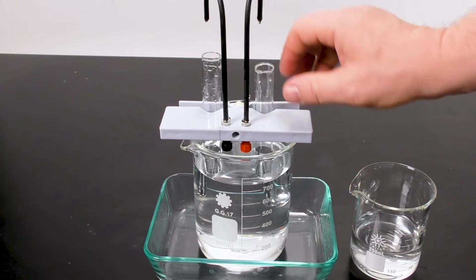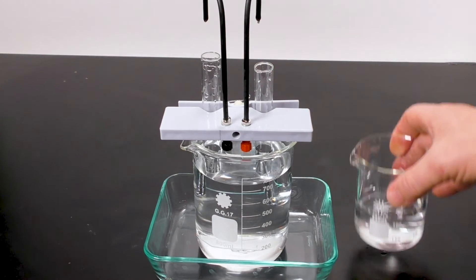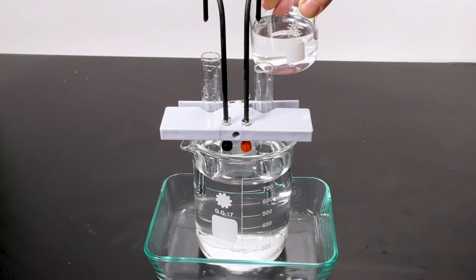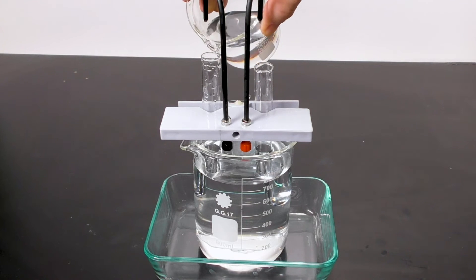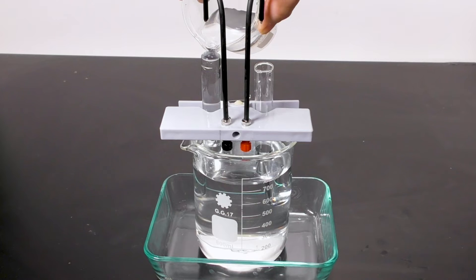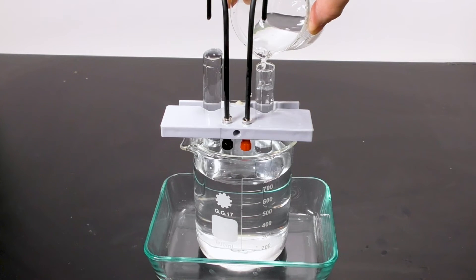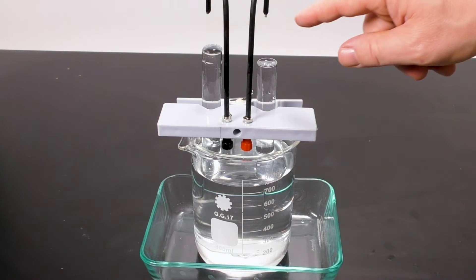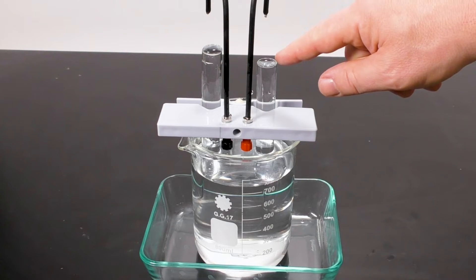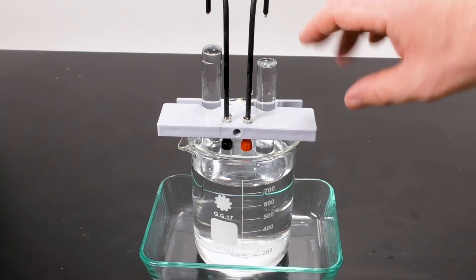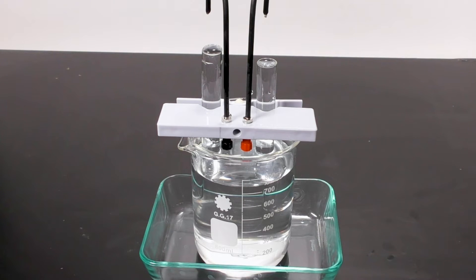With the apparatus upside down, pull the test tubes down and fill each one with the solution. You want to make sure that the electrode is right above the test tube so when you invert this and push the test tube down, the electrode fits right into the test tube.